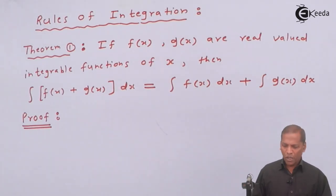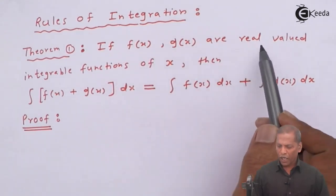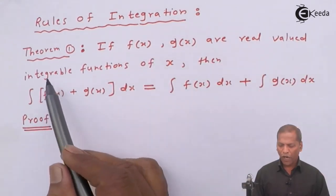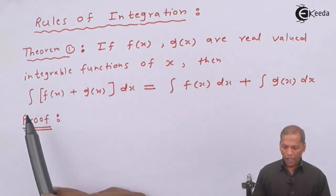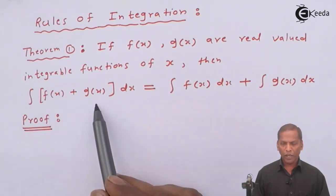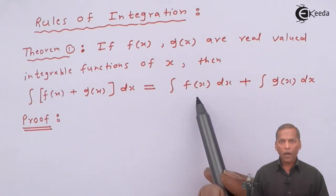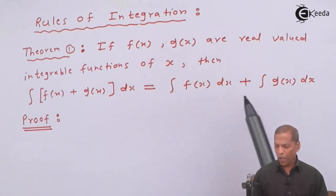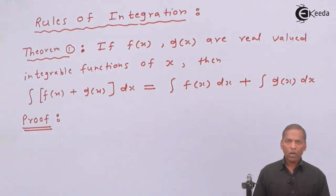Theorem 1 is: if f(x) and g(x) are real valued integrable functions of x, then integral [f(x) + g(x)] dx is equal to integral f(x) dx plus integral g(x) dx.